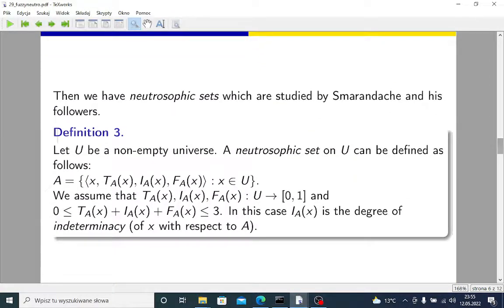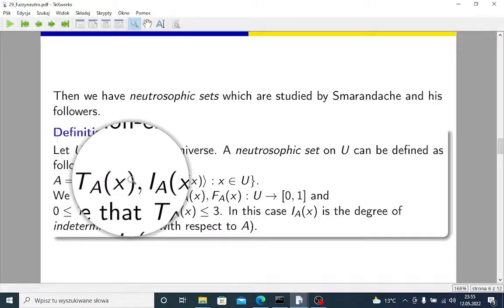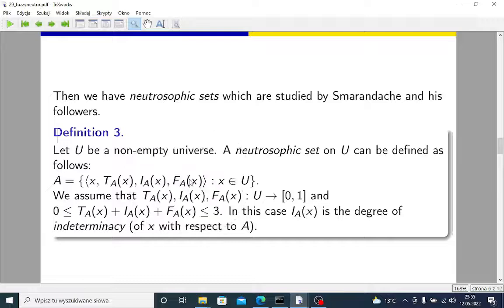Then we have neutrosophic sets, and they are studied by Smarandache, Florentin Smarandache, and by his followers and collaborators all over the world. In this case, we have three functions: truth, ignorance and falsity. But this is not the whole thing.